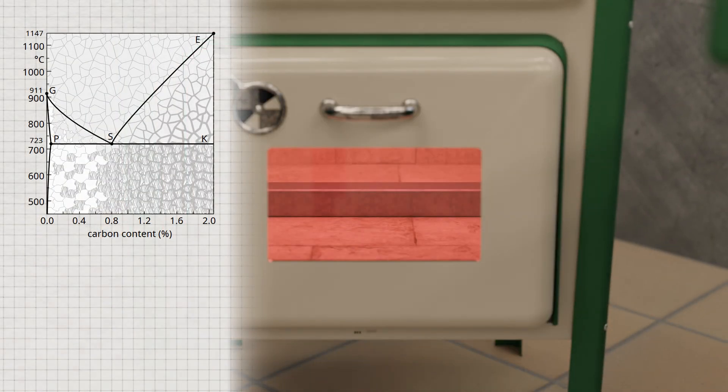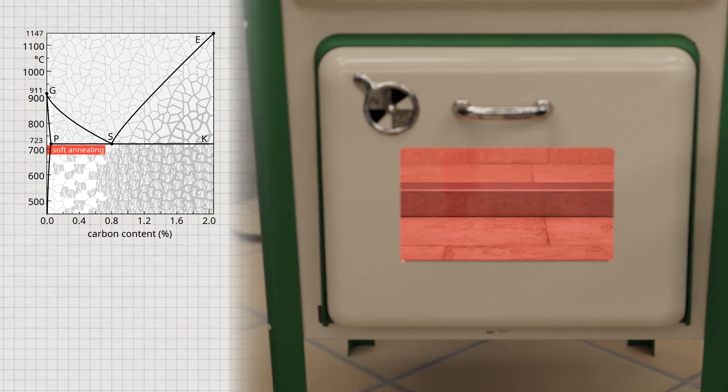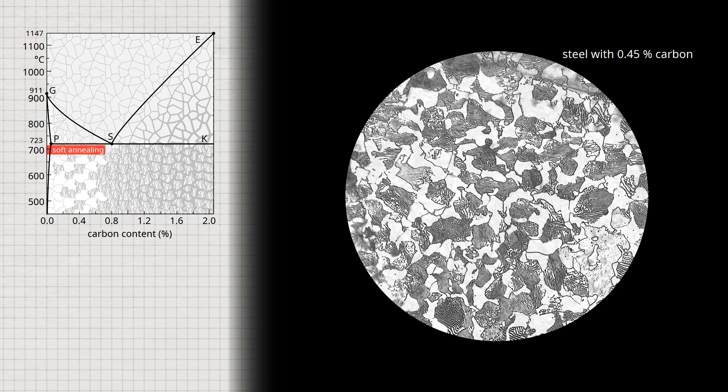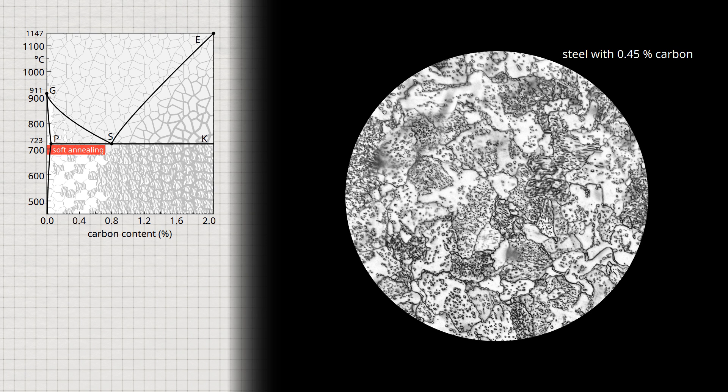This can be achieved by so-called soft annealing. In soft annealing, hypoeutectoid steels are heated to just below the PS line, just before the cementite has converted to austenite. The lamellar cementite now has sufficient time to transform by diffusion processes into the thermodynamically more favorable roundish form. Spherical cementite is then formed from the lamellar cementite of the pearlite, also known as spheroidal cementite. Hypereutectoid steels are heated just above or fluctuating around the SK line during soft annealing. A particularly homogeneous microstructure with finely distributed spherical cementite can be achieved by hardening the steel before soft annealing, where the spherical cementite forms from the already relatively homogeneous martensite structure.